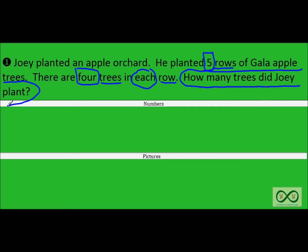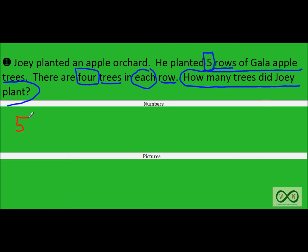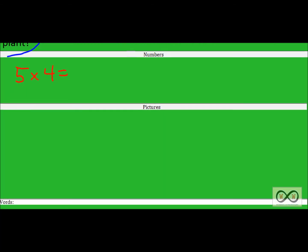Anytime we think of groups of, we're usually thinking about multiplication, and that's what we're going to use to solve this problem. So let's get our multiplication sentence down. We have five groups or rows of four, and we have to find out what that equals — we have to evaluate this multiplication sentence. First, we're going to look at making an array.